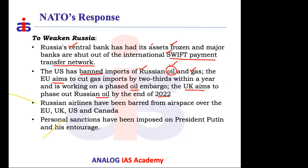Russian airlines were barred from accessing airspace over EU countries, the UK, the US, and Canada. Sanctions were imposed on Putin and all associates involved in the war effort — prohibiting them from doing business in western countries. Anyone violating these sanctions also faces penalties. These measures aim to cripple Russia economically by targeting its key revenue sources.